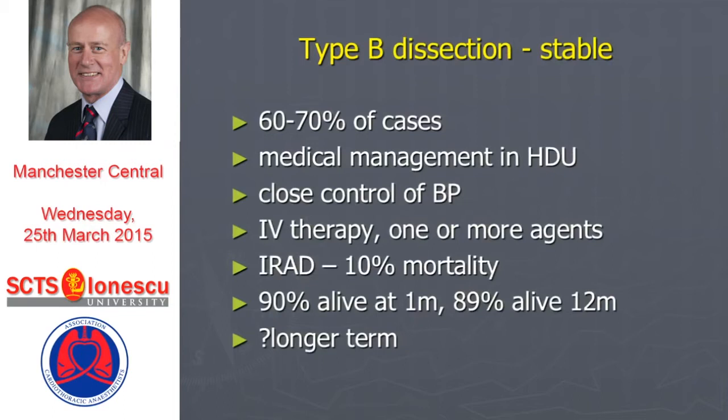The issue really, in terms of endovascular therapy, comes into its own in the management of type B pathology. The majority of type B dissections are regarded as stable or uncomplicated — probably up to two-thirds. That's medical management with close control of blood pressure, and the IRAD data tell us that strategy is associated with a 10% all-comers mortality, with the majority of those managed medically alive at one month and still at one year.